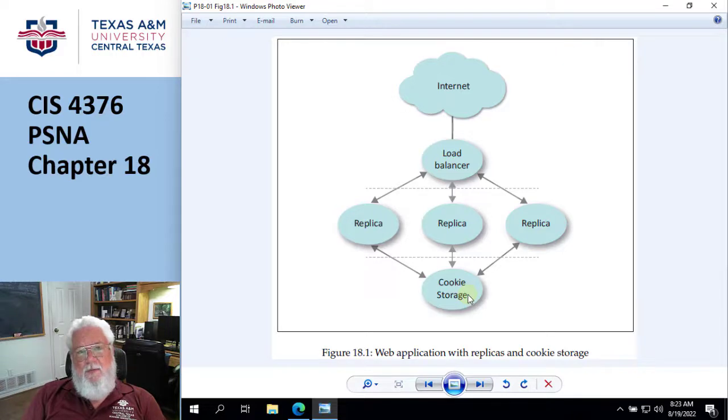So it's that weak link in the chain kind of thinking. So once you find the weak link in the chain, you need to figure out, do I make it fatter? Do I put in more? Do I have a replica for the database? Maybe the database is the issue.